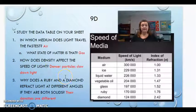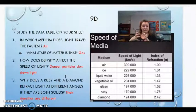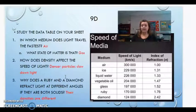How does density affect the speed of light? Well, the denser particles slow down the light. So the more density we have or the denser the medium, the slower the light is going to actually travel through it.